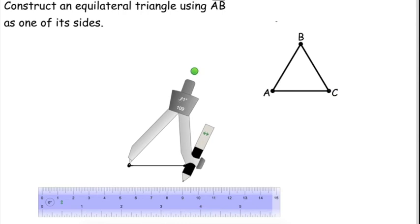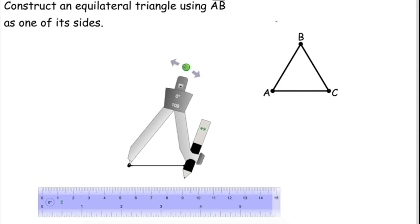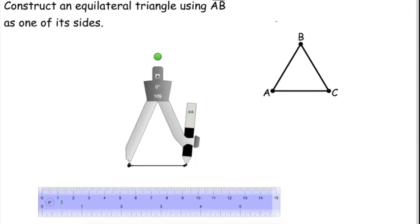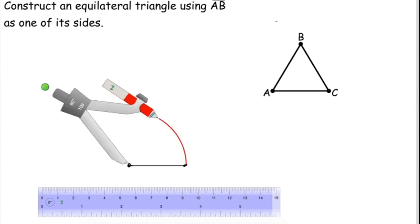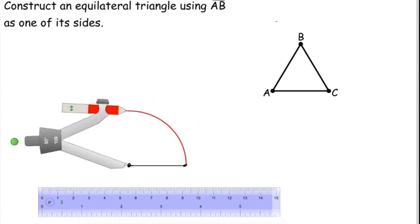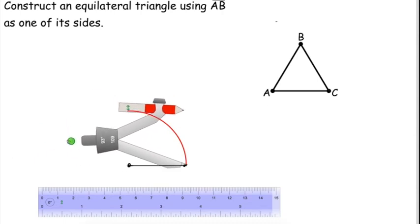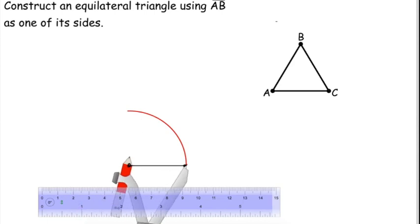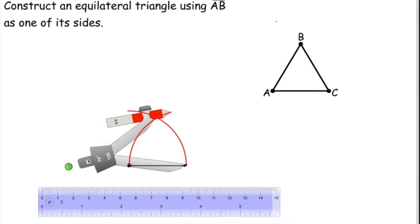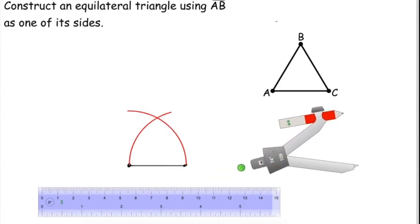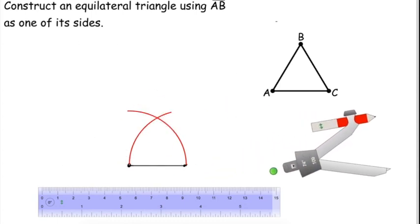And we're going to do this again. We're going to bring our compass here, line it up with the endpoints. Now we're going to draw an arc to the other side, and then switch which side the point is on and which side the pencil is on. So we can draw the second arc and find that intersection of the arcs, which give us the third point for our equilateral triangle.